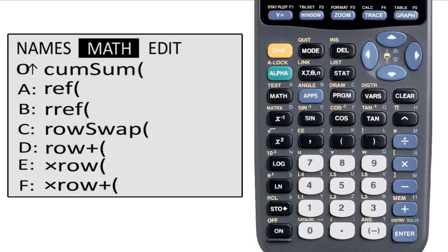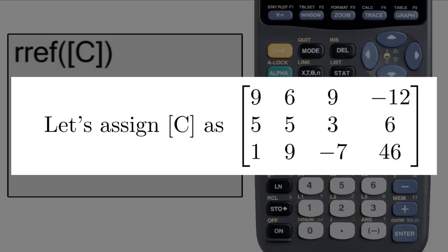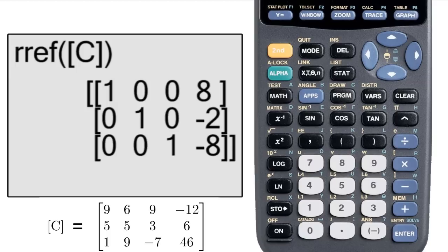The next two functions are very important and very useful: row echelon form and reduced row echelon form. They work exactly as you would expect. You put the function on the home screen. Let's use RREF because it goes further and I like it better. Enter the matrix. In this case, let's use this one. Hit enter and it returns the reduced row echelon form.